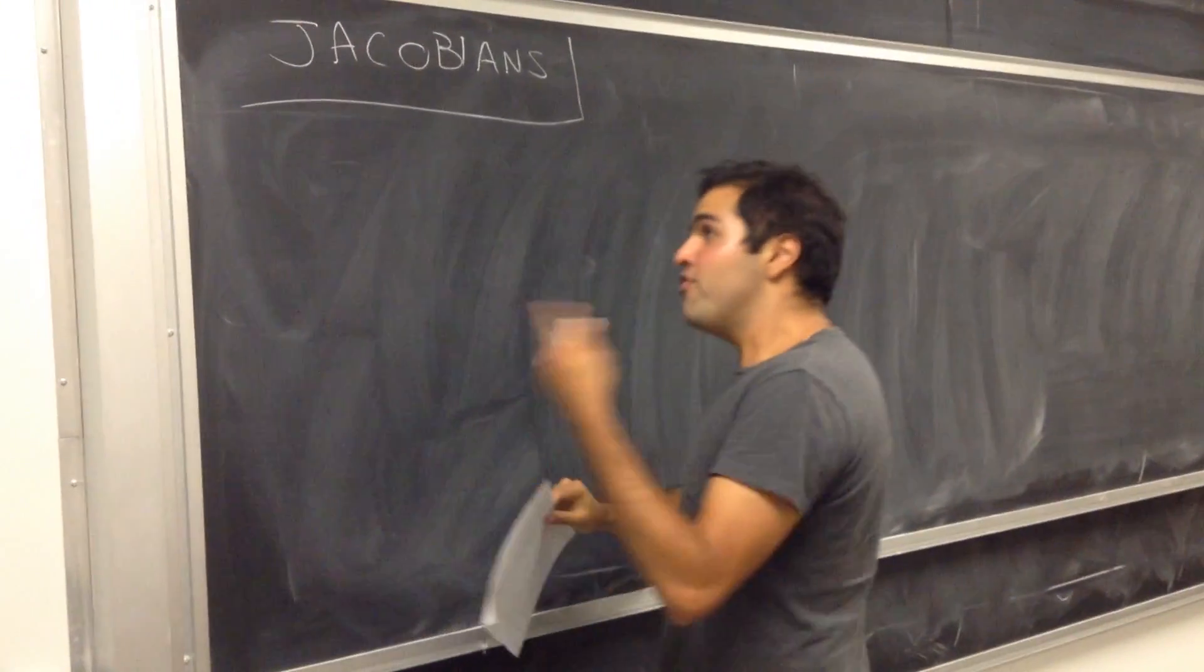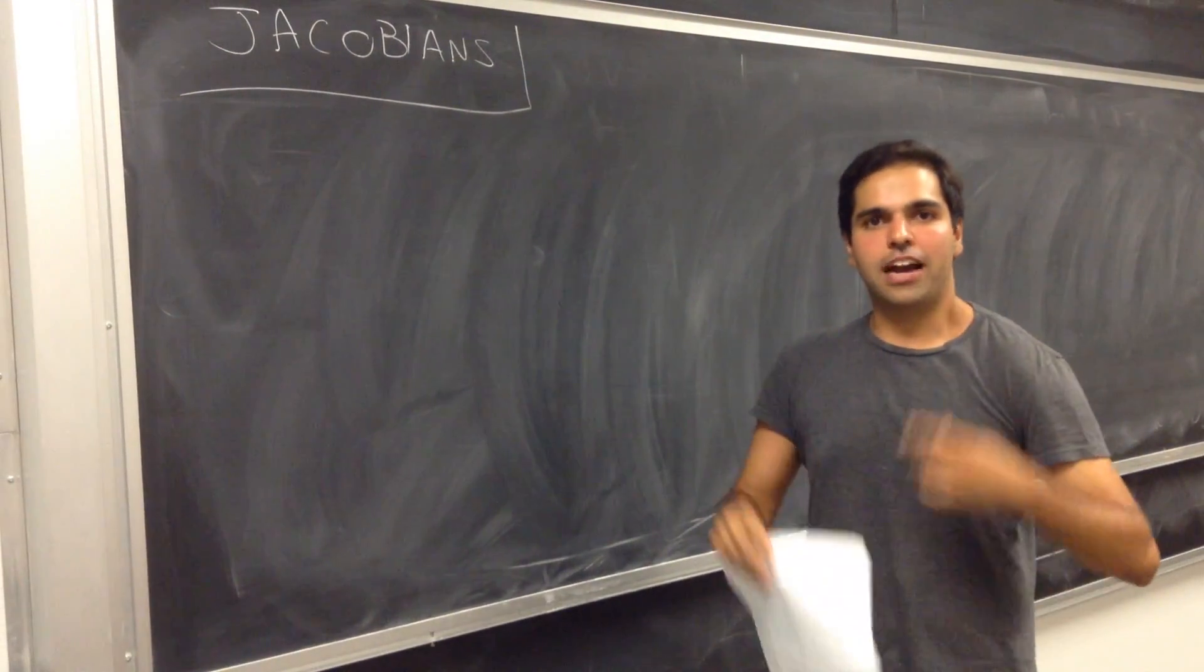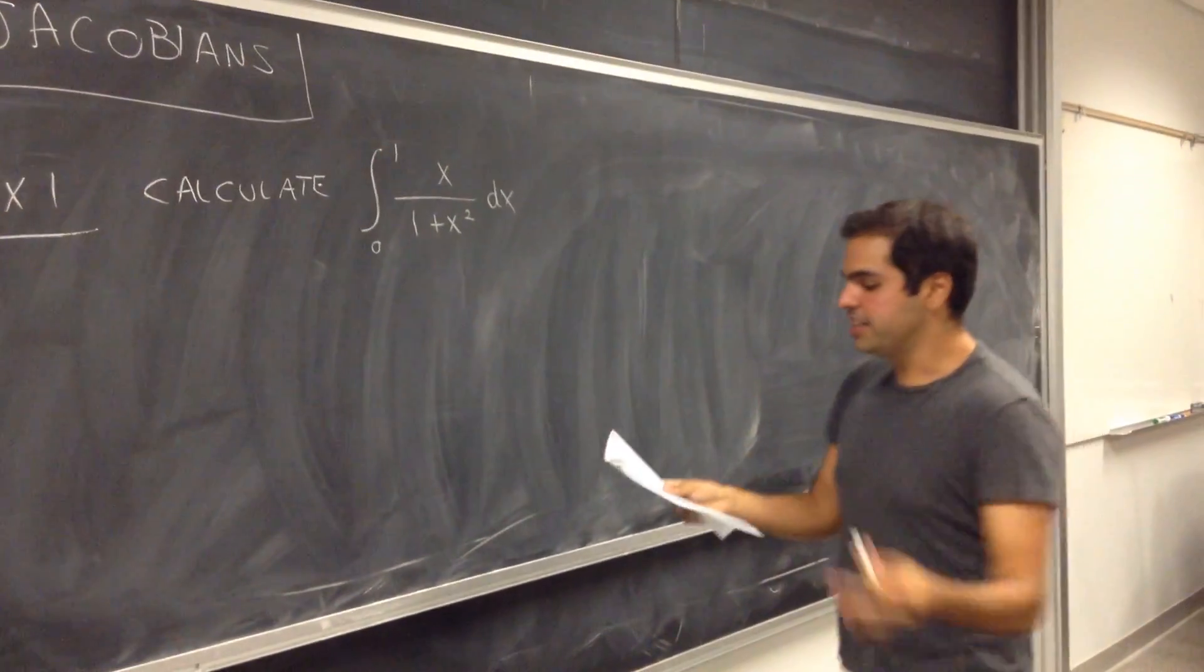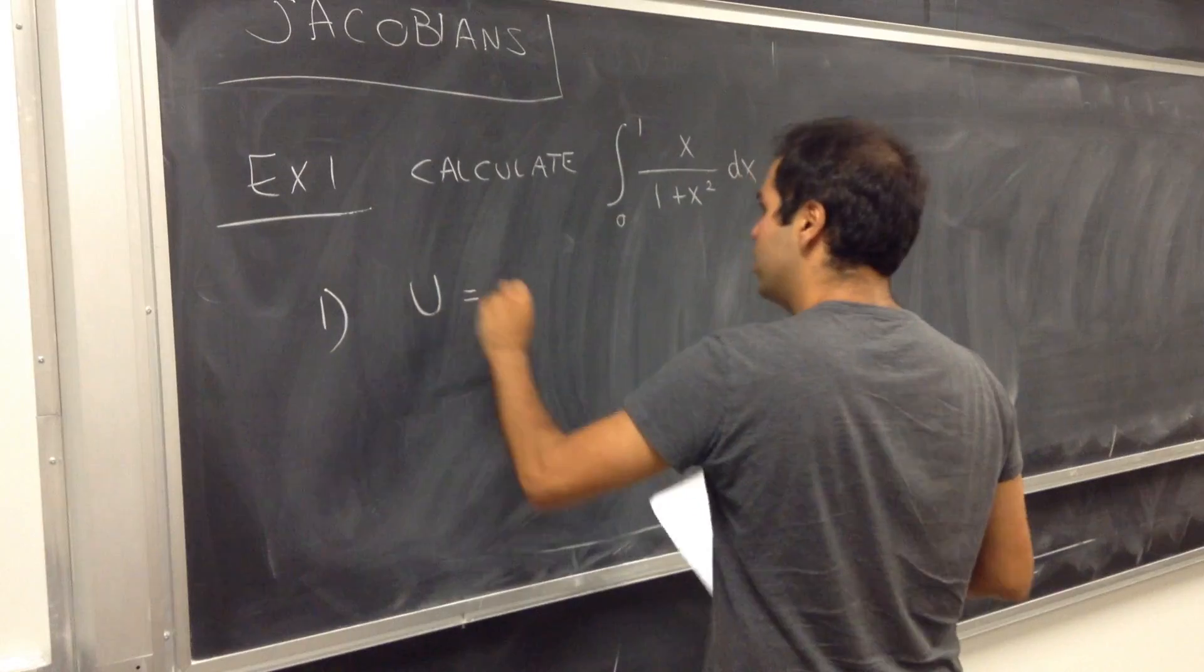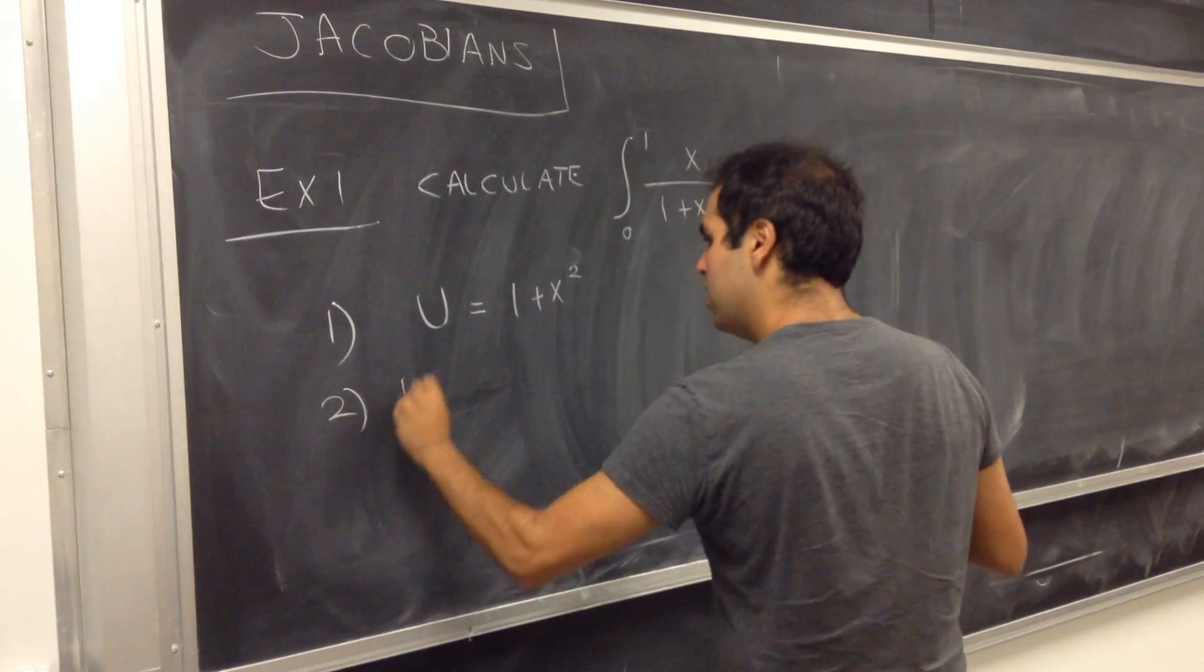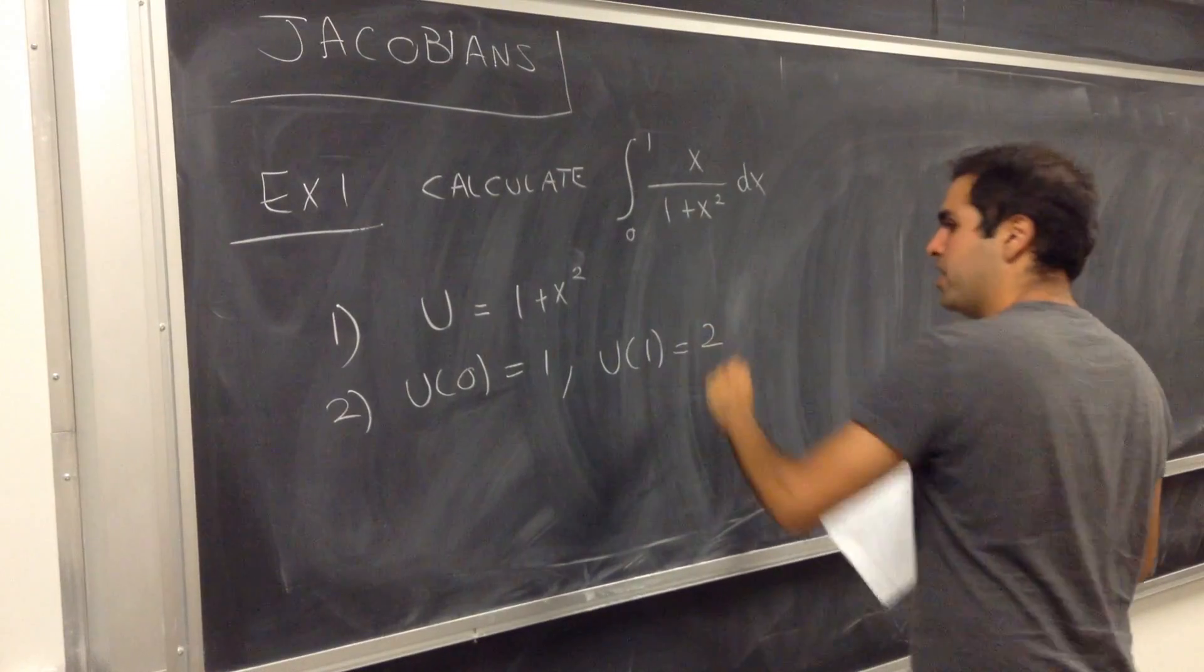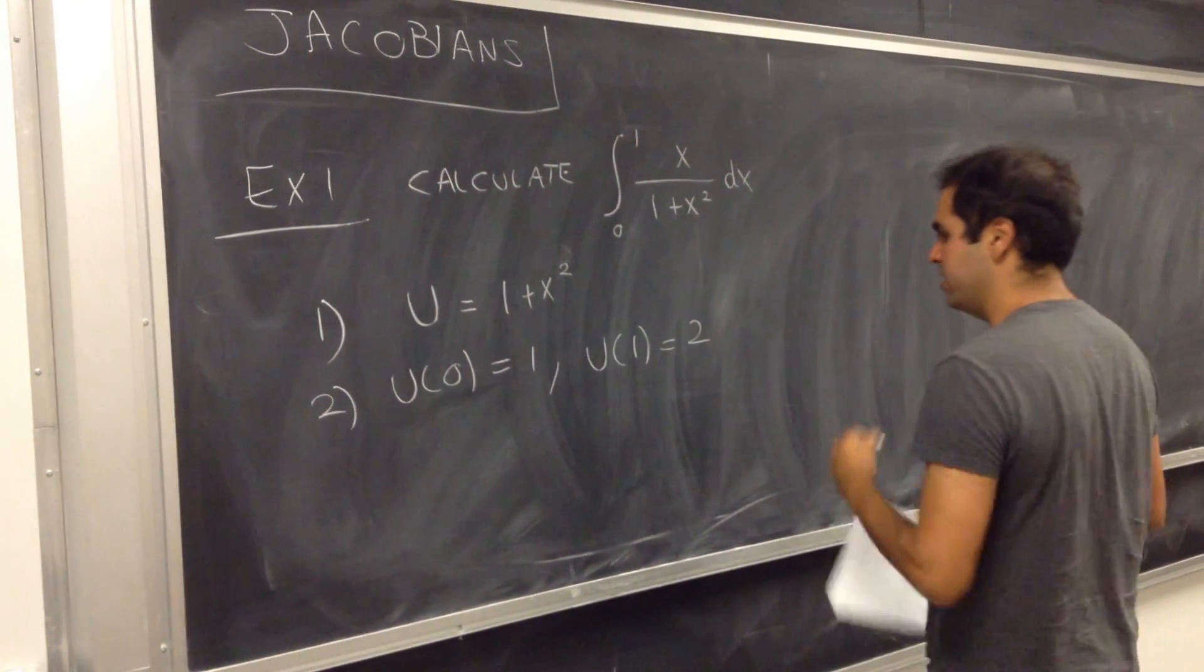So let me first show you a 1D example, and then I want to show you that the multivariable example is exactly the same. Well, there are a bunch of steps that we need to take. Well, not a bunch, three steps. First of all, you would let u be 1 plus x squared. That's one thing. Second of all, u of 0 becomes 1, u of 1 becomes 2. Again, 1 plus 0 squared is 1, 1 plus 1 squared is 2.